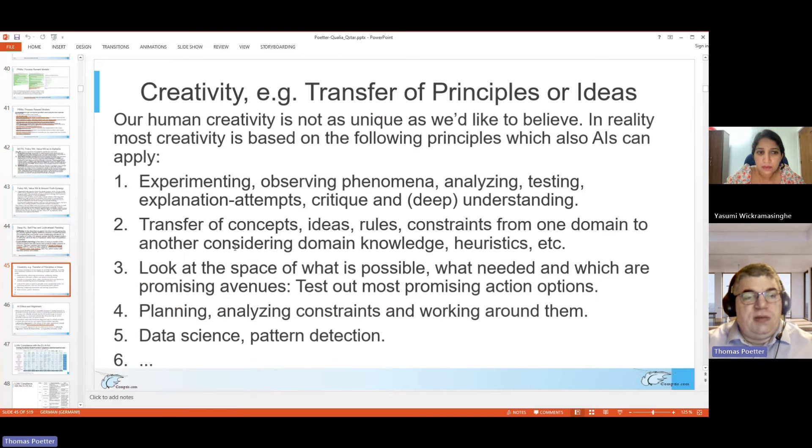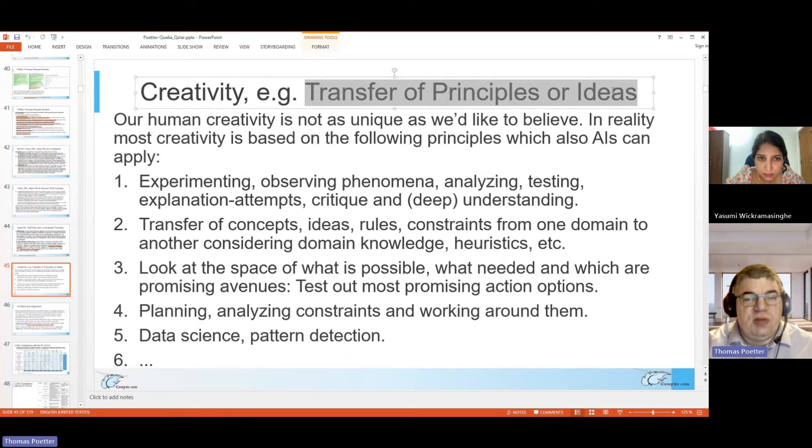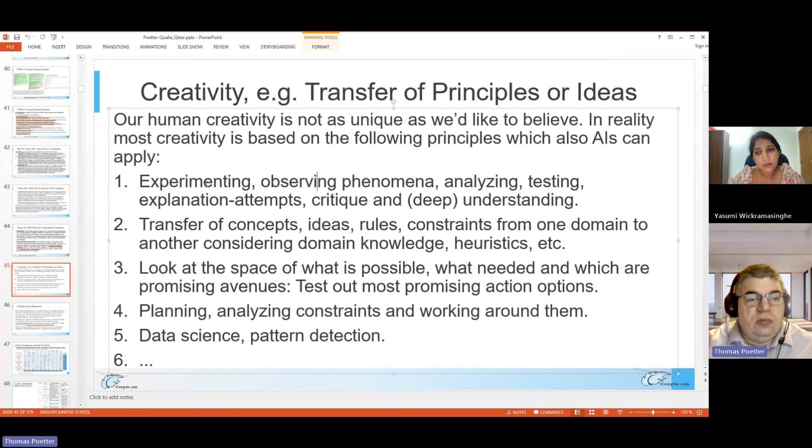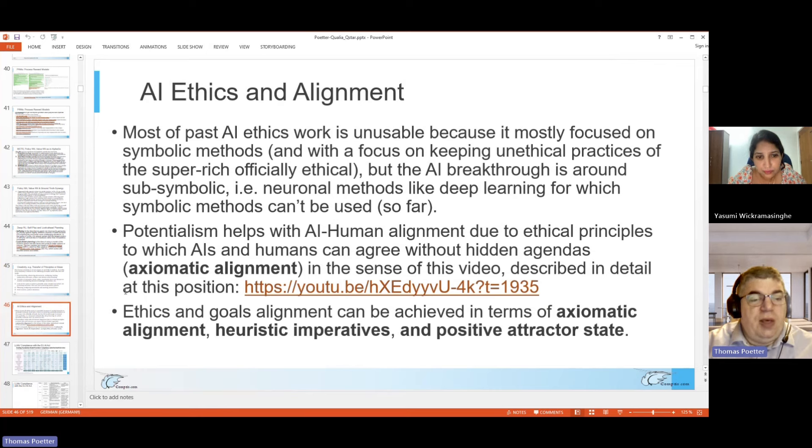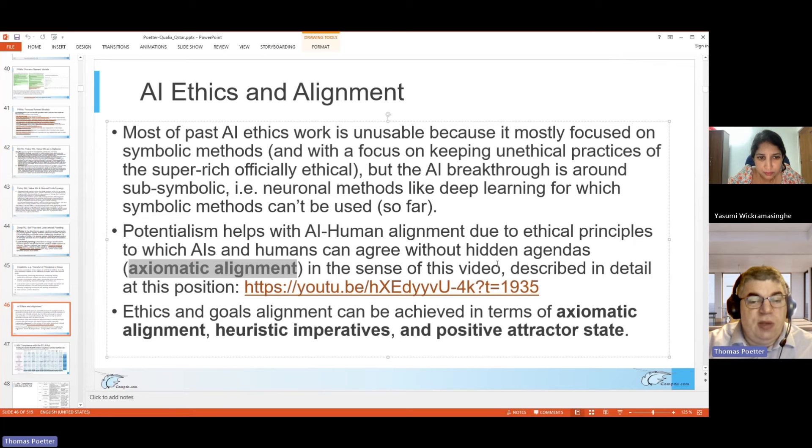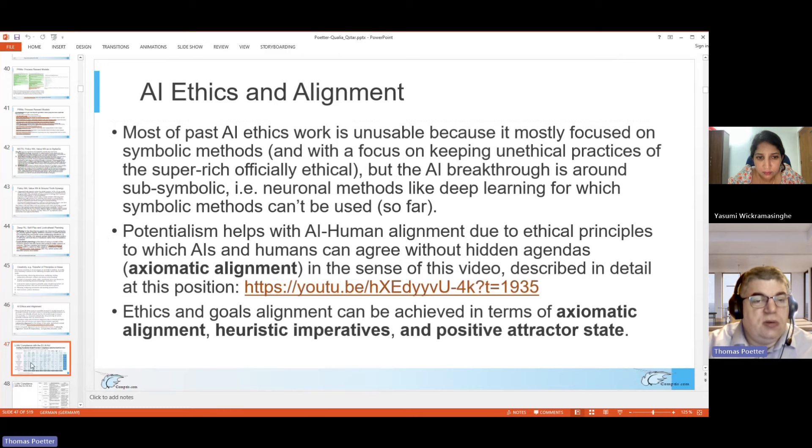For example, also taking into account a ground truth signal, what is really true, not falling victim to fake news or false facts, alternative facts. Then there's new ideas about deep reinforcement learning around self-play and look-ahead planning. Self-play is the idea that an agent itself can improve itself, for example by trying to do chess playing. Look-ahead planning also is known from chess, for example, that for some chess programs one says it can plan seven or ten steps ahead. This is the technique behind this. Technically, this is called model predictive control, MPC, or this MCTS. Then there's the idea to model creativity, for example the transfer of principles, models or ideas from one domain to another. These ideas can come from experimenting, from observing, from analyzing, testing, from explanation attempts, critique, a deep understanding. Then they can be transferred to other domains like, for example, considering knowledge or heuristics and then look at the search space in that new domain. What is possible? What is needed? Which are promising avenues? And test out the most promising actions or options. Planning, analyzing constraints and working around them, data science and pattern detection. It should be ethical, of course. And then there's interesting alignment ideas like axiomatic alignment and around heuristics, imperatives, and positive attractor states for the ethics part.